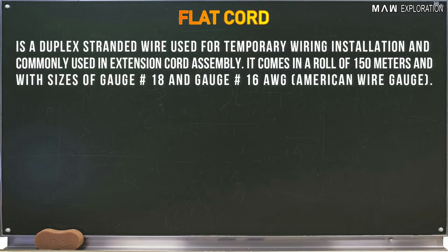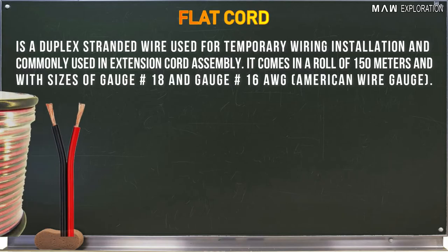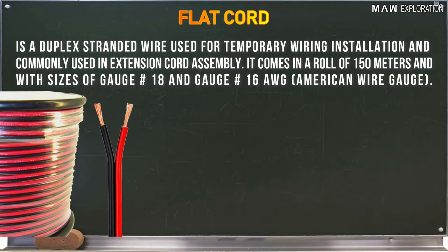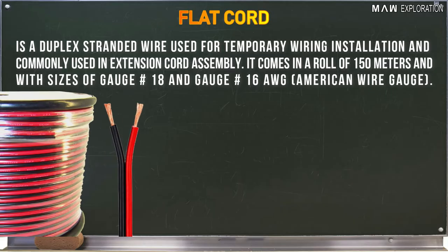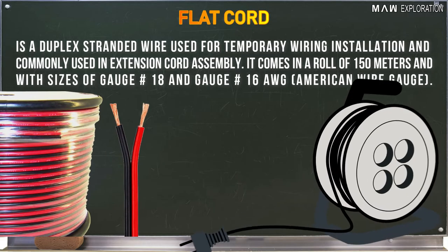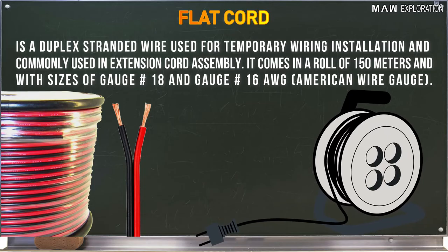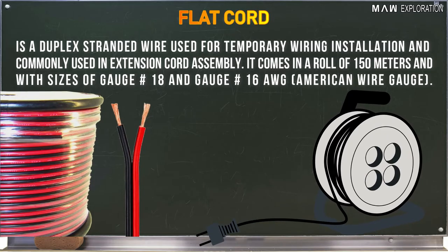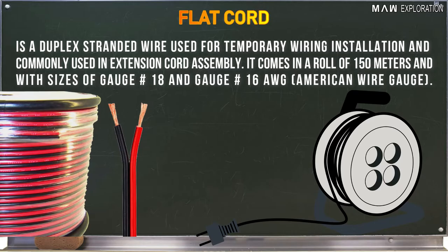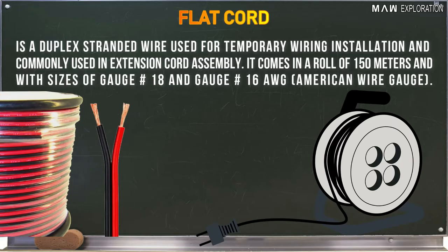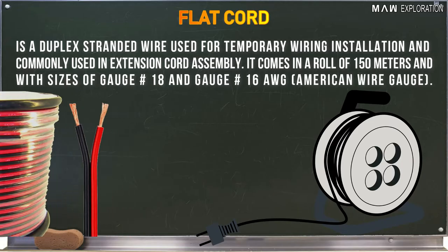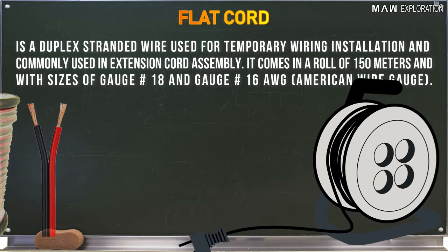Flat cord is a duplex stranded wire used for temporary wiring installation and commonly used in extension cord assembly. It comes in a roll of 150 meters and with sizes of gauge number 18 and gauge number 16 AWG, or American Wire Gauge.